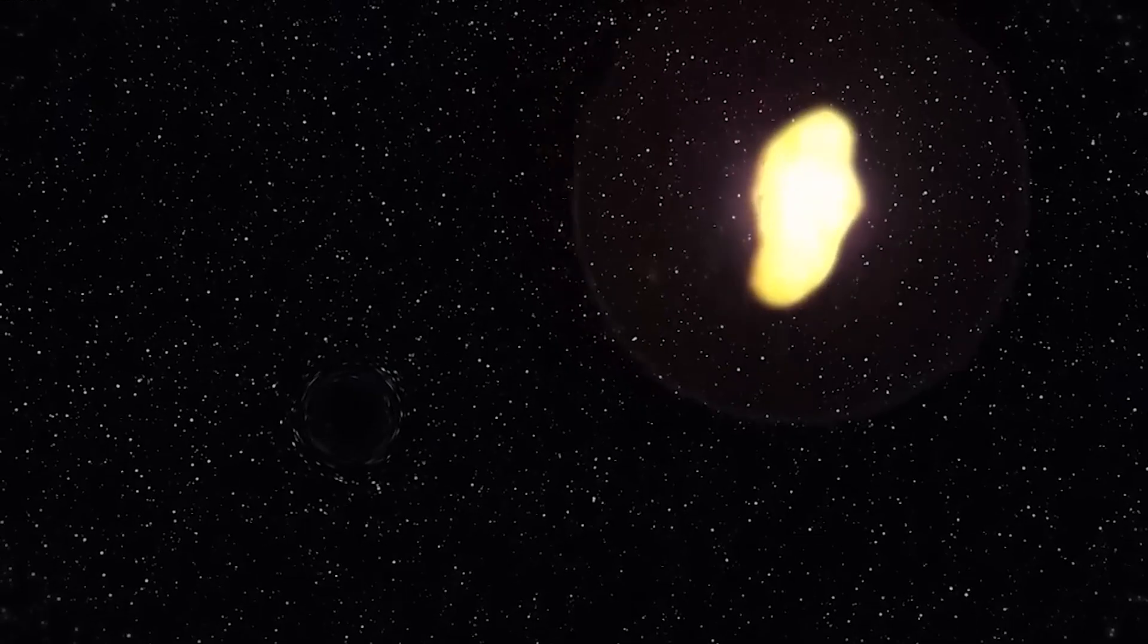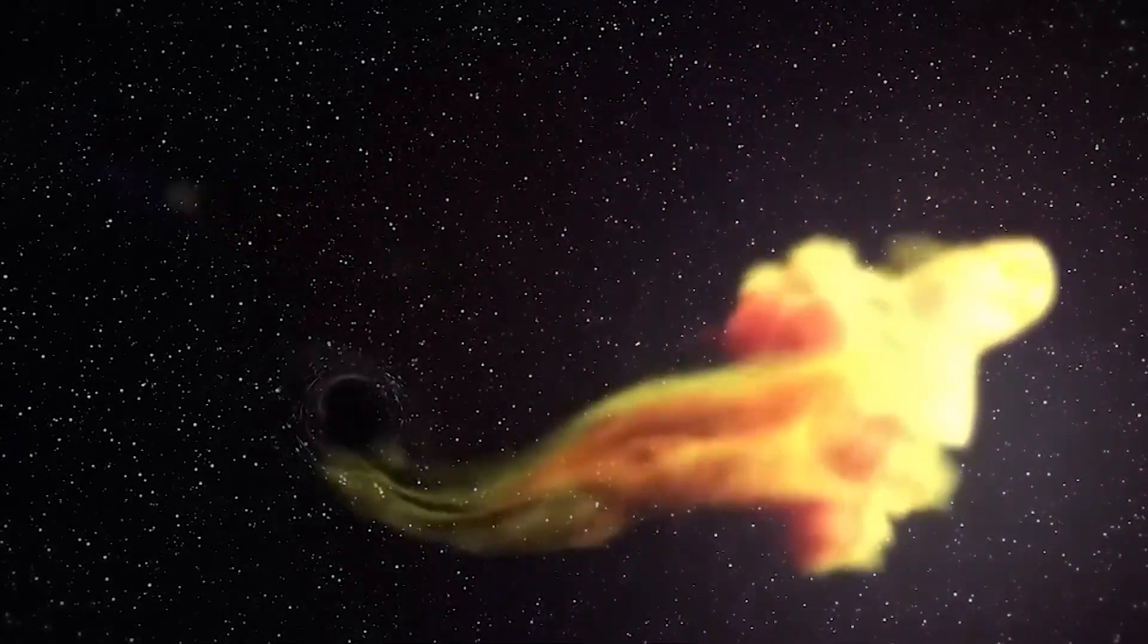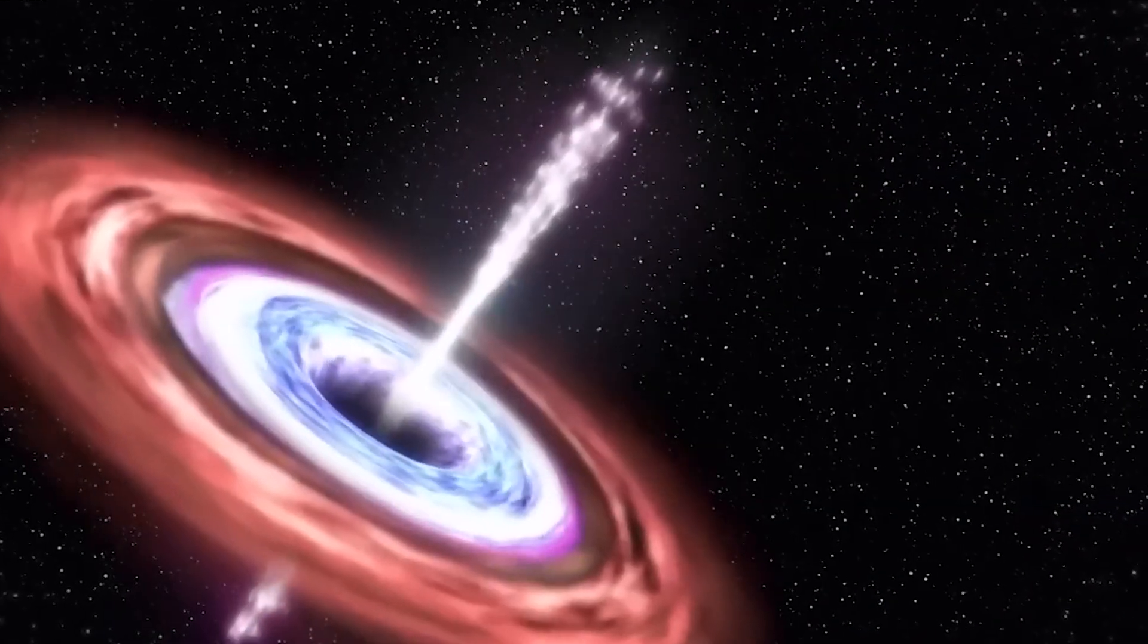The black hole's gravity pulls gas toward it, and as the gas spirals down, it releases energy, creating a powerful beam of electrons that move close to the speed of light. This beam is what we see as the bright gaseous jet coming from M87.